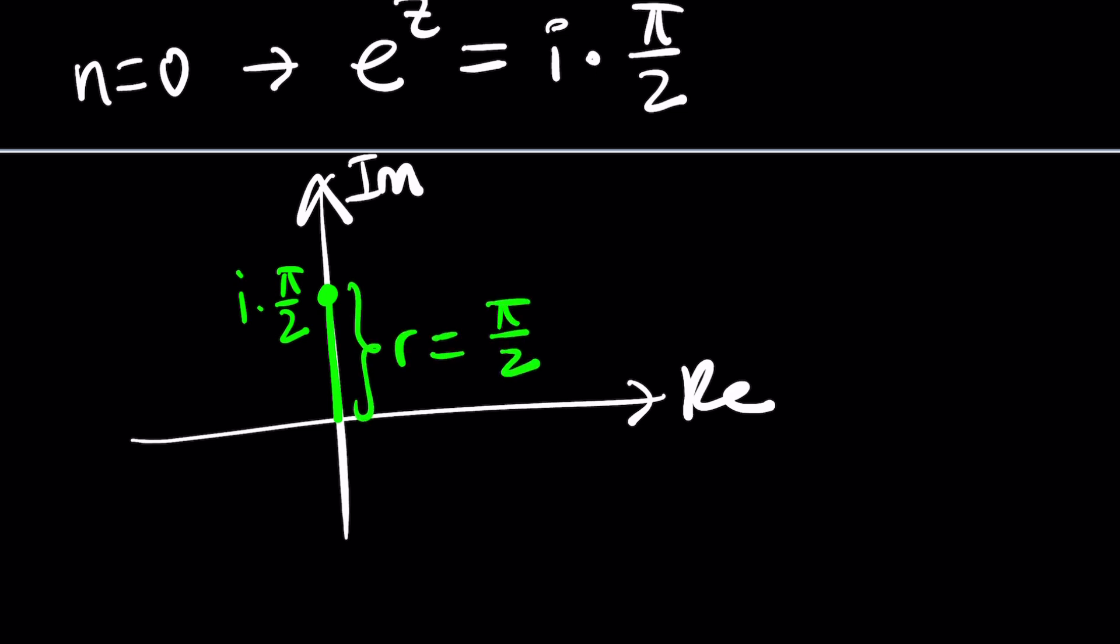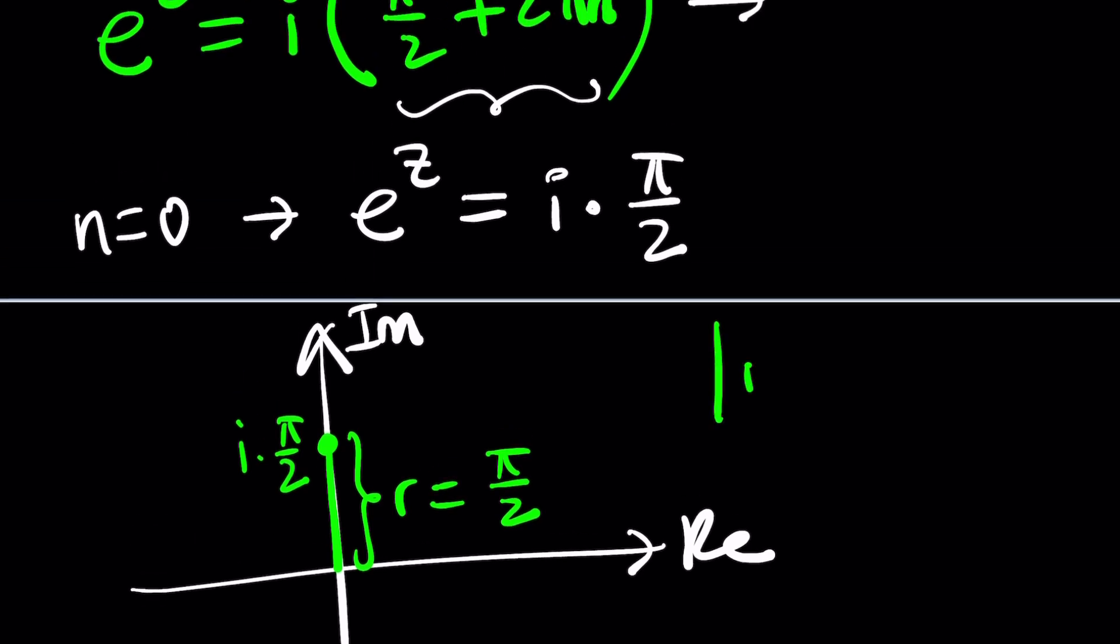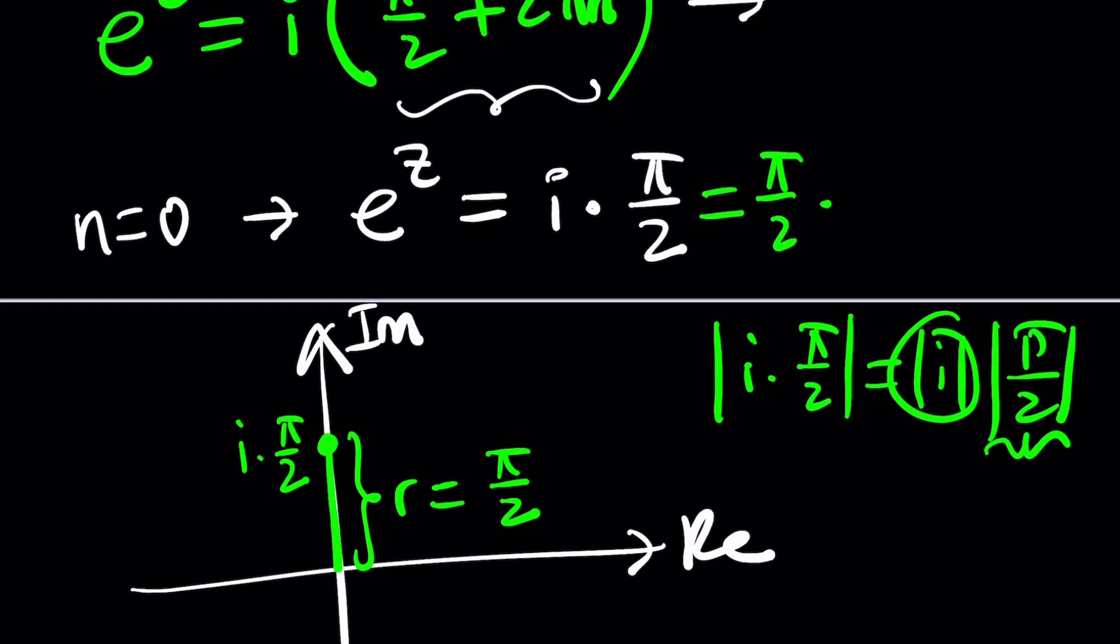If you're not convinced, go ahead and take the absolute value of iπ over 2, and you're going to realize this is the same thing as the absolute value of i times the absolute value of π over 2. But this is 1, and this is a real number, which is positive, so its absolute value is itself. And now we are ready to write this as r times e to the power iθ. The argument is π over 2 again.